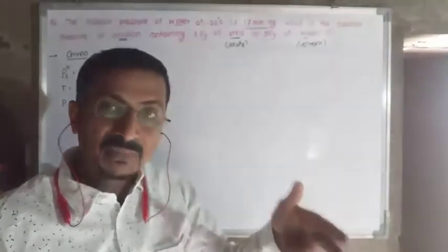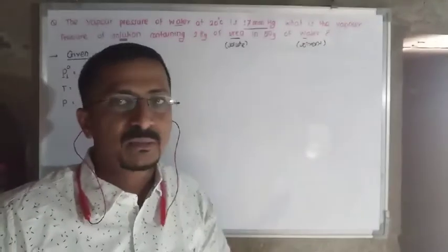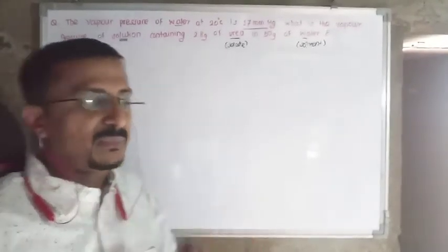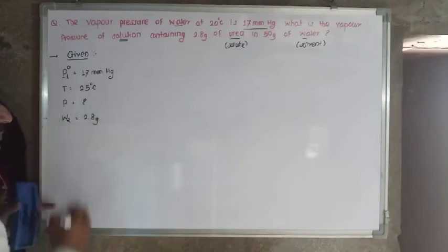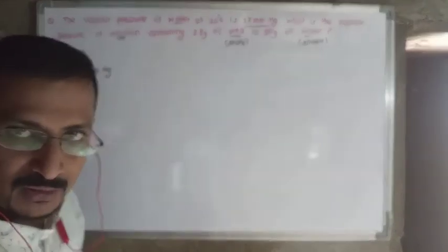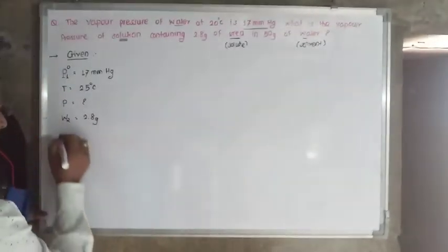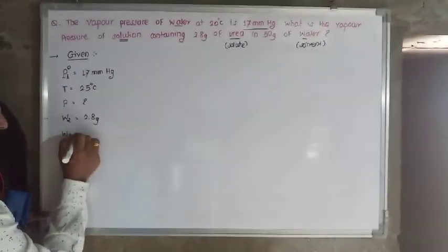Solutes are always represented by subscript 2 and solvent by subscript 1 — remember this going forward. So 2.8 grams is the weight of solute, symbol w2. In 50 grams of water, water is the solvent, so weight of solvent, symbol w1, is 50 grams. These are the given data from the problem written one by one.